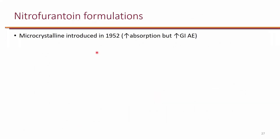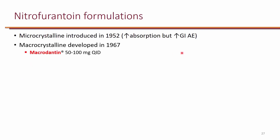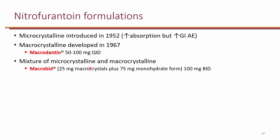Nitrofurantoin was first developed in 1952 as a microcrystalline formulation with good absorption but increased GI adverse effects. A macrocrystalline formulation was later developed, which improved GI adverse effects but had reduced absorption, requiring dosing four times a day. Macrobid was subsequently developed as a combination of monohydrate and macrocrystalline formulations, improving both absorption and GI adverse effects, and is dosed twice a day at 100 mg.